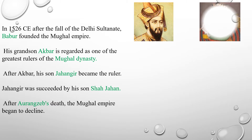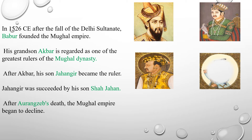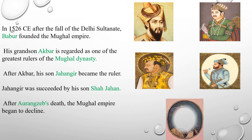Akbar, Shah Jahan, Jahangir, and Aurangzeb were great and powerful rulers of the Mughal Empire. List out the important rulers of the Mughal Empire. Very good — Babur, Akbar, Jahangir, Shah Jahan, and Aurangzeb.